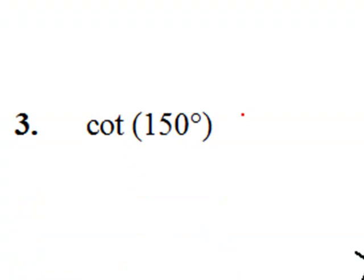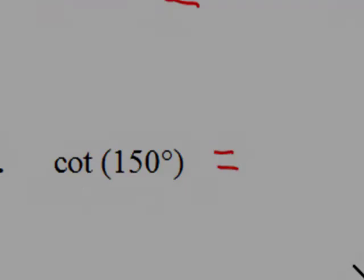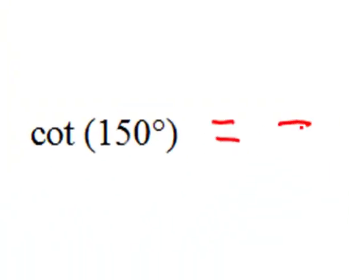Here we have the cotangent of 150 degrees. What's it equal to? Let's see. 150 is in quadrant 2, right there. Quadrant 2, that cotangent is negative again.